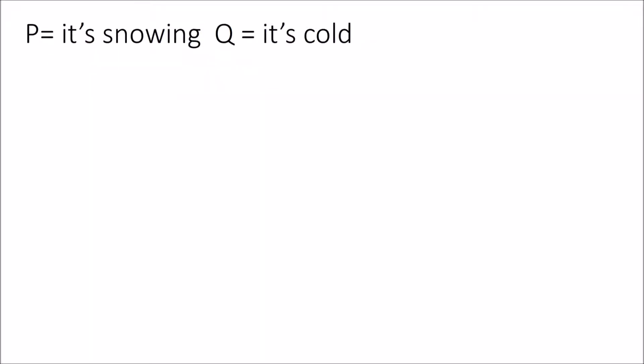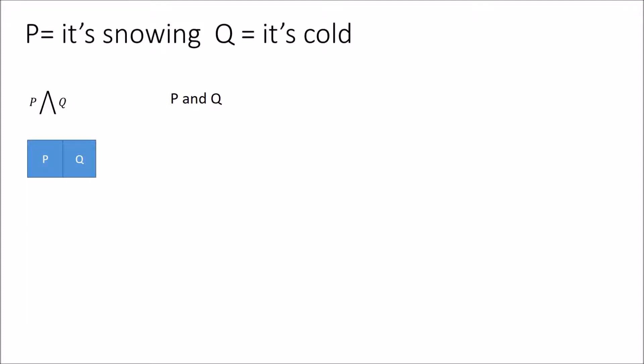Let's have a look at another symbol. This is the V flipped upside down. The key word here is AND — it means both P and Q. So in this situation, it has to be snowing and it has to be cold at the same time. Let's set up a truth table to test under what circumstances this statement will hold.